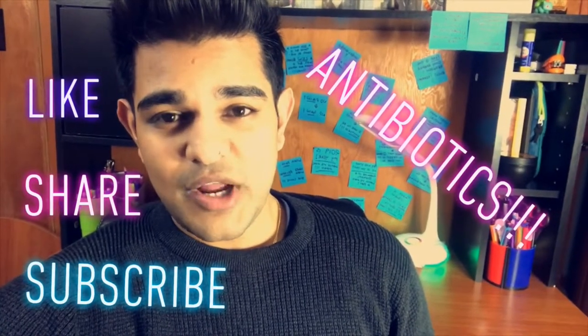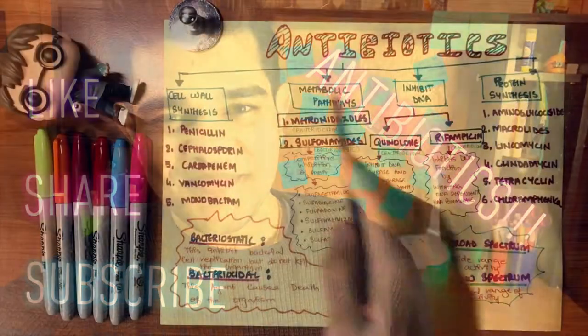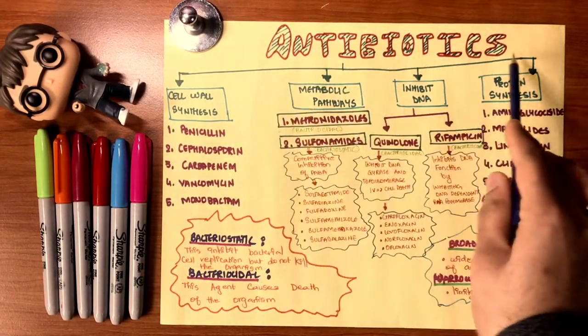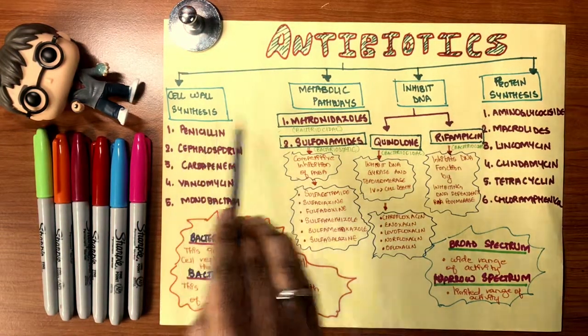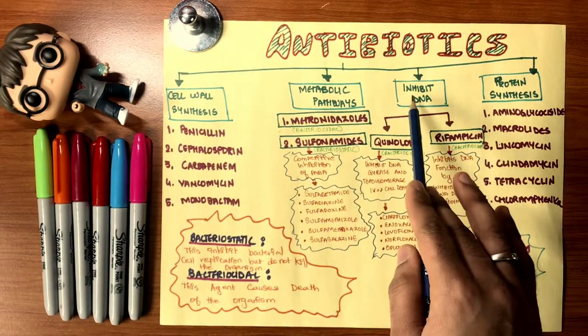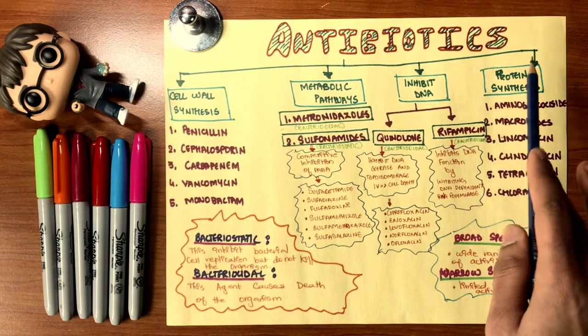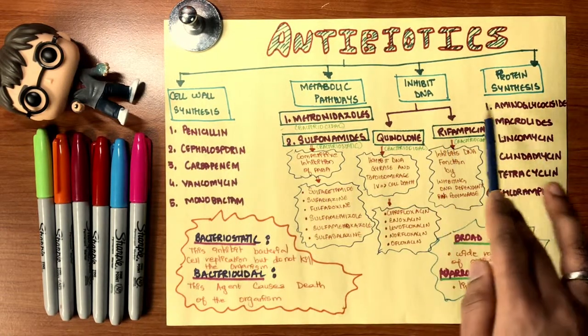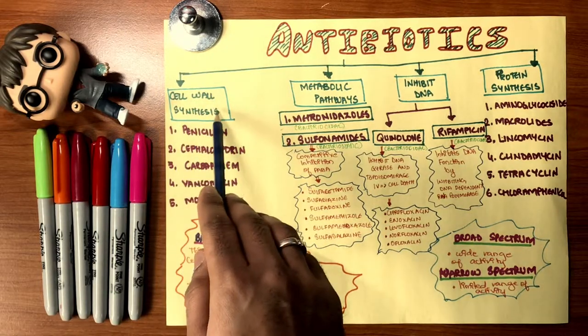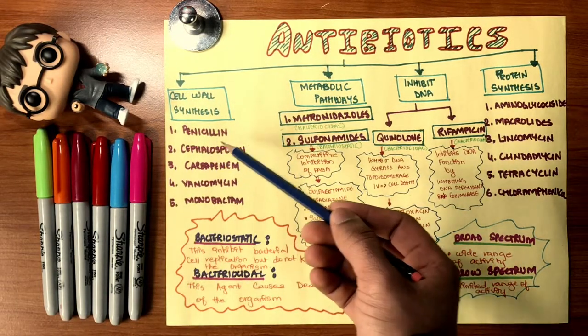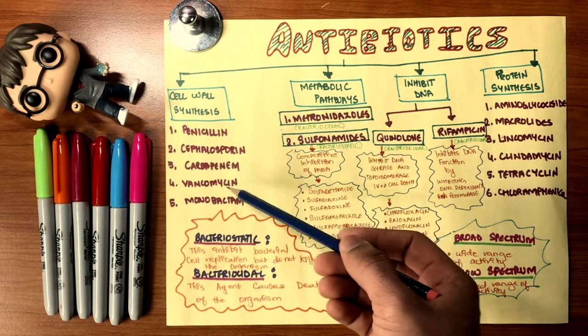Like, share, and subscribe, and hang in there for more. Bacteria cause infection and we don't like infection, so we need antibiotics. These are further classified into cell wall synthesis, metabolic pathway inhibition, and inhibition of DNA and protein synthesis.